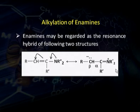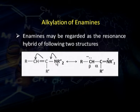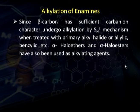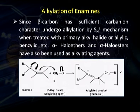Next we will study alkylation of enamines. Enamines may be regarded as the resonance hybrid of two structures. In the first structure, nitrogen carries a lone pair of electrons; in the second structure, the beta carbon atom carries a lone pair of electrons. Both can act as nucleophiles. However, since the beta carbon atom has sufficient carbanion character, it normally undergoes alkylation by SN2 mechanism when treated with primary alkyl halides, allylic or benzylic halides, or haloethers used as alkylating agents.